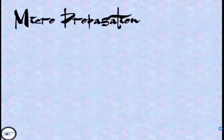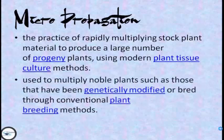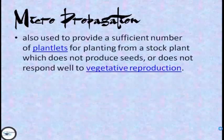First, let's define the word micropropagation. Micropropagation is a practice of rapidly multiplying stock plant material to produce a large number of progeny plants using modern plant tissue culture methods. It is also used to multiply noble plants, such as those that have been genetically modified or bred through conventional plant breeding methods. Micropropagation is also used to provide a sufficient number of plantlets for planting from a stock plant which does not produce seeds or does not respond well to vegetative reproduction.